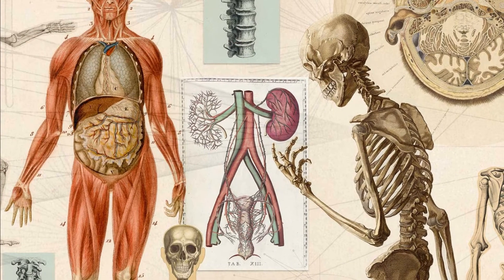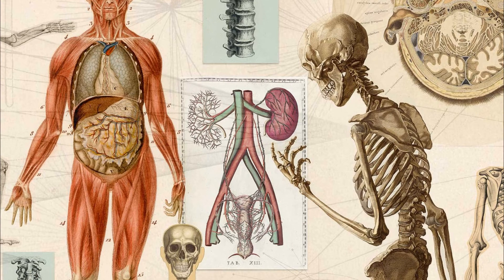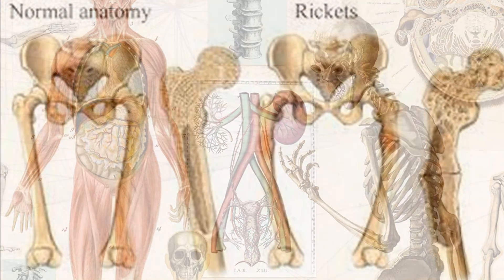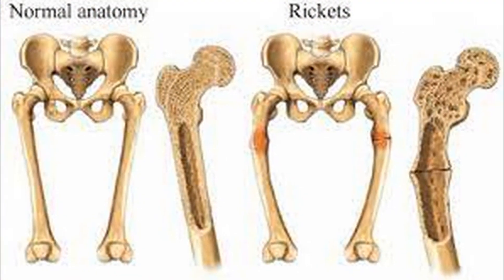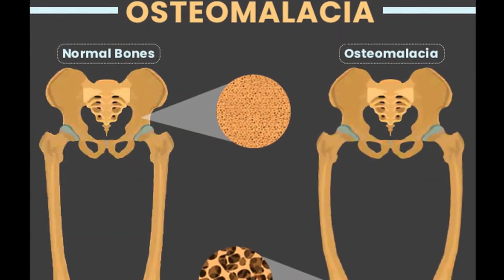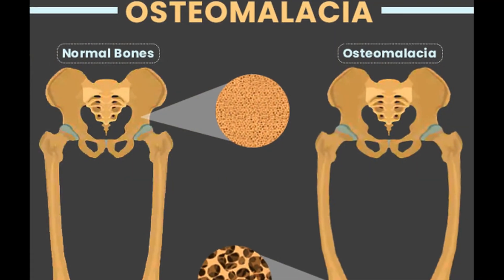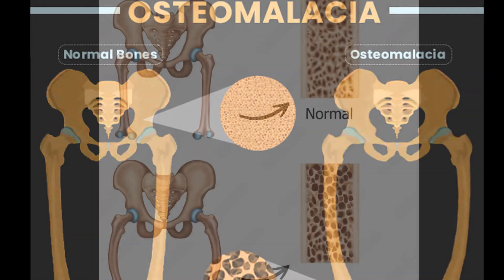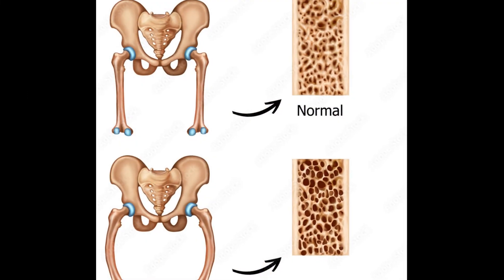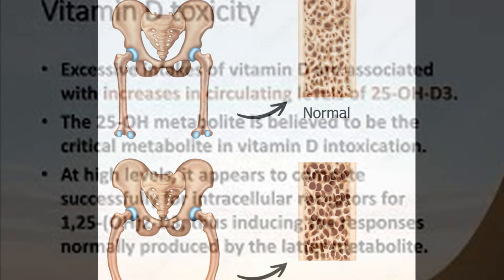The amount of bone mineral deposited is reduced. As a result, the shape, structure, and strength of bones are affected. In children, the deficiency condition is called rickets, and in adults it is called osteomalacia. In both conditions, the bones become soft, bend easily, and are prone to deformities.